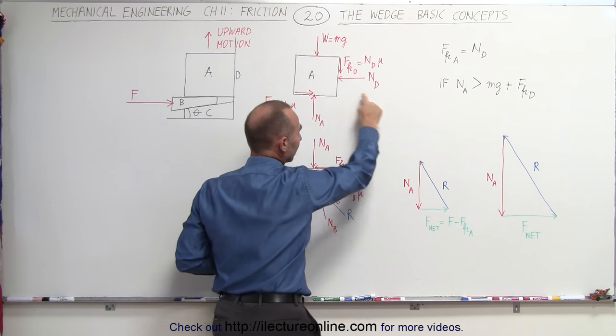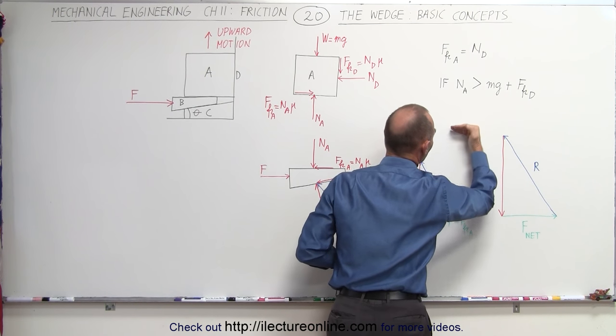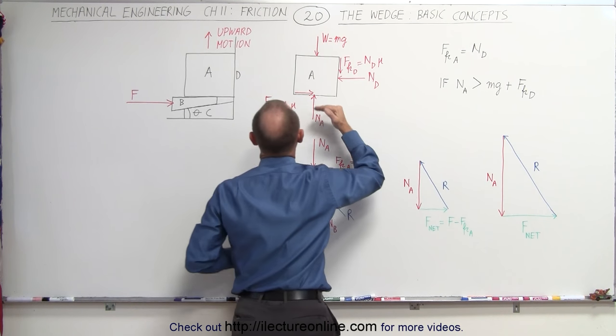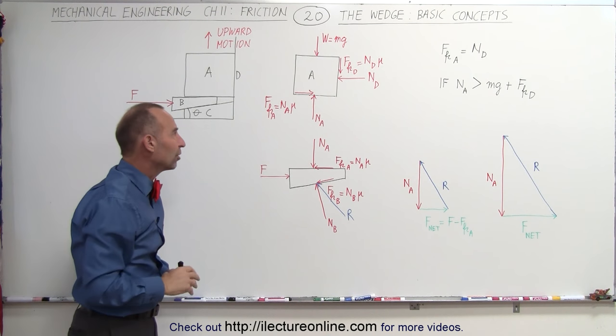if N sub A is greater than the weight and the friction force, the object will go upward. So that's the ultimate objective here, is to get A to go up to drive the wedge in there.